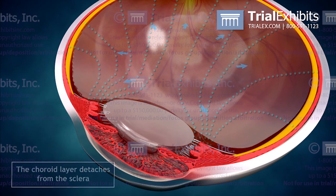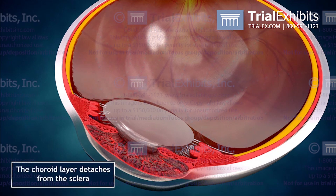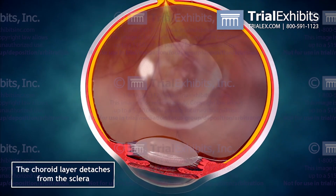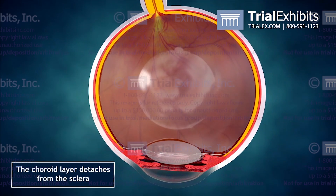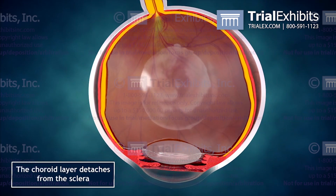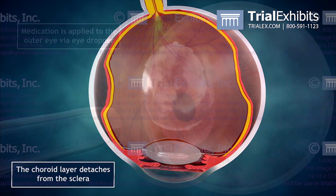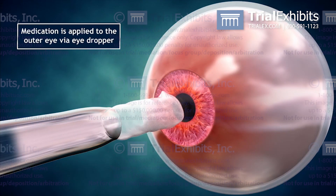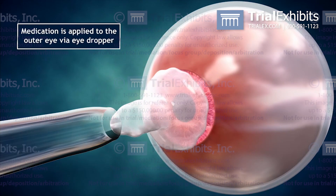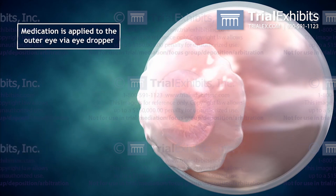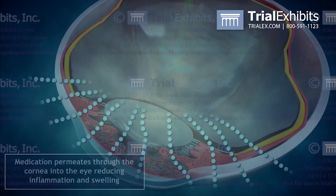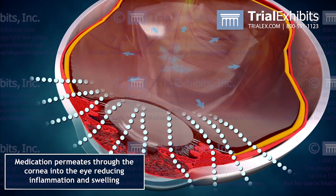If the ciliary body becomes damaged or inflamed, the production of fluid shuts down. This leads to a reduction in the pressure of the eye and can cause the layers of the wall to detach. This condition can often be resolved with the administration of medication onto the eye.